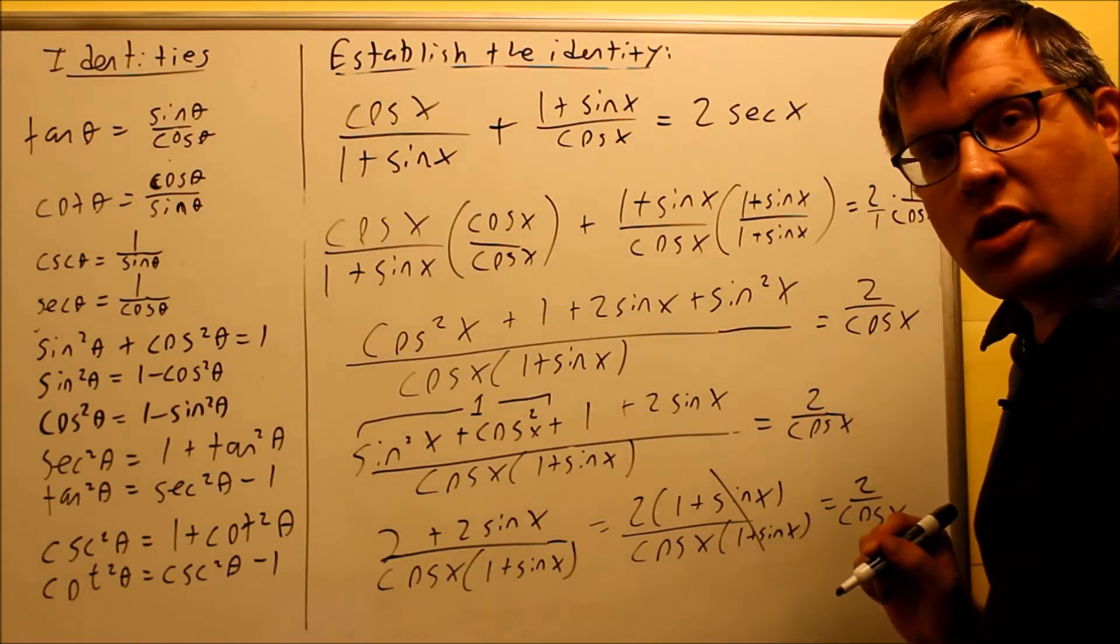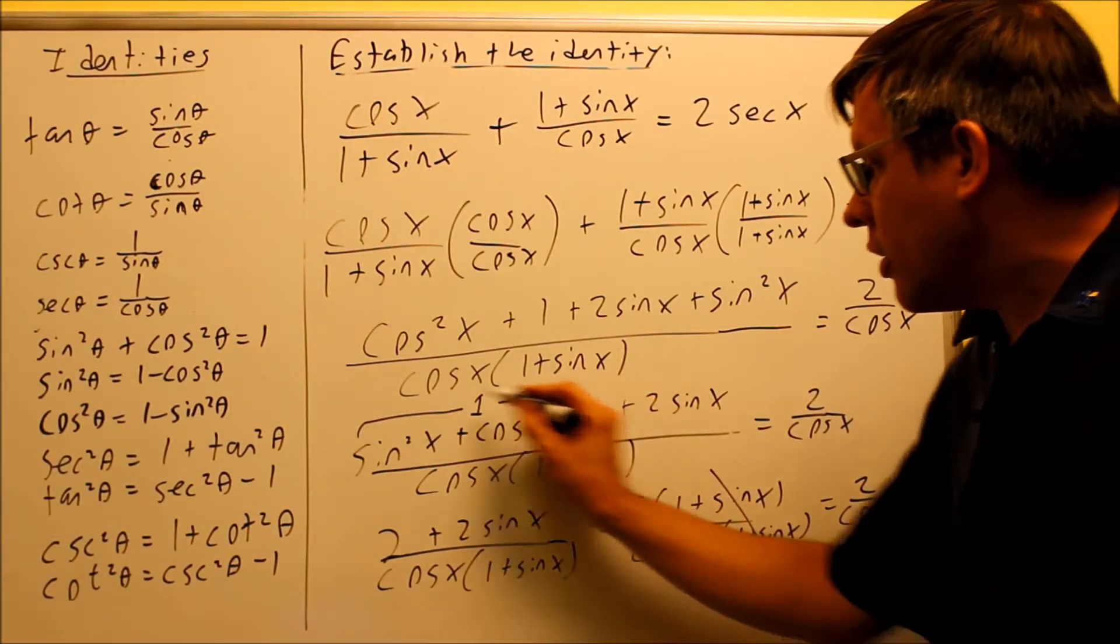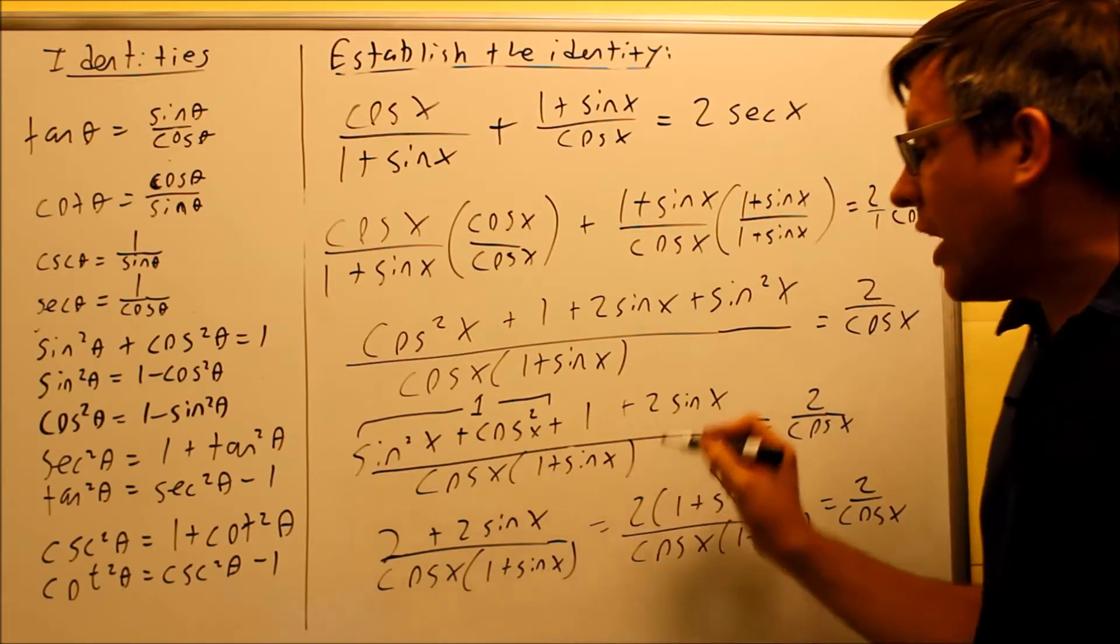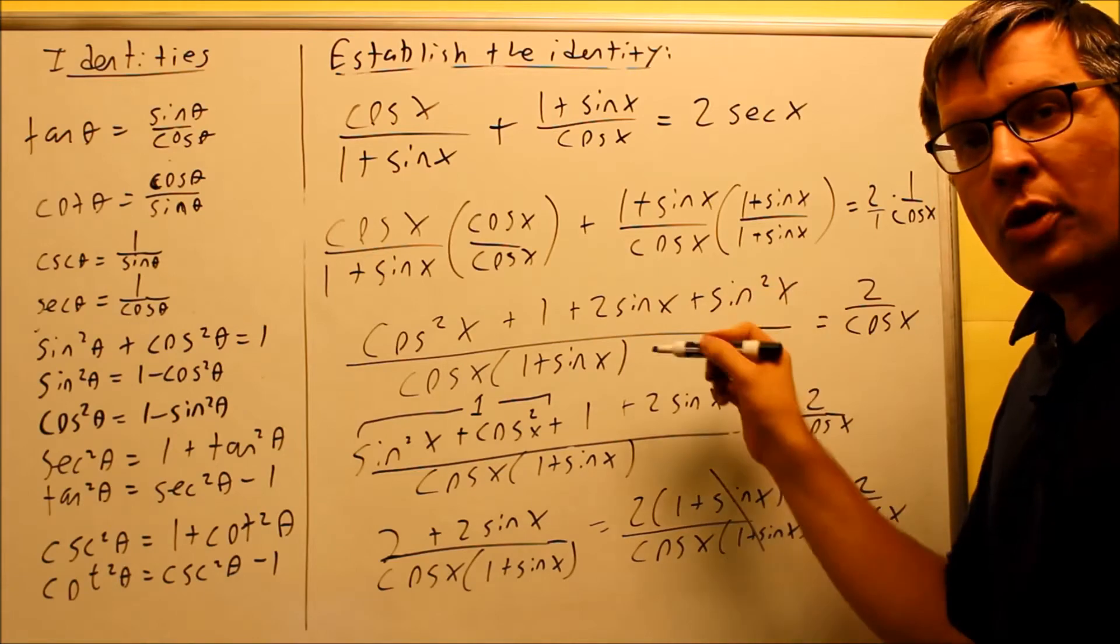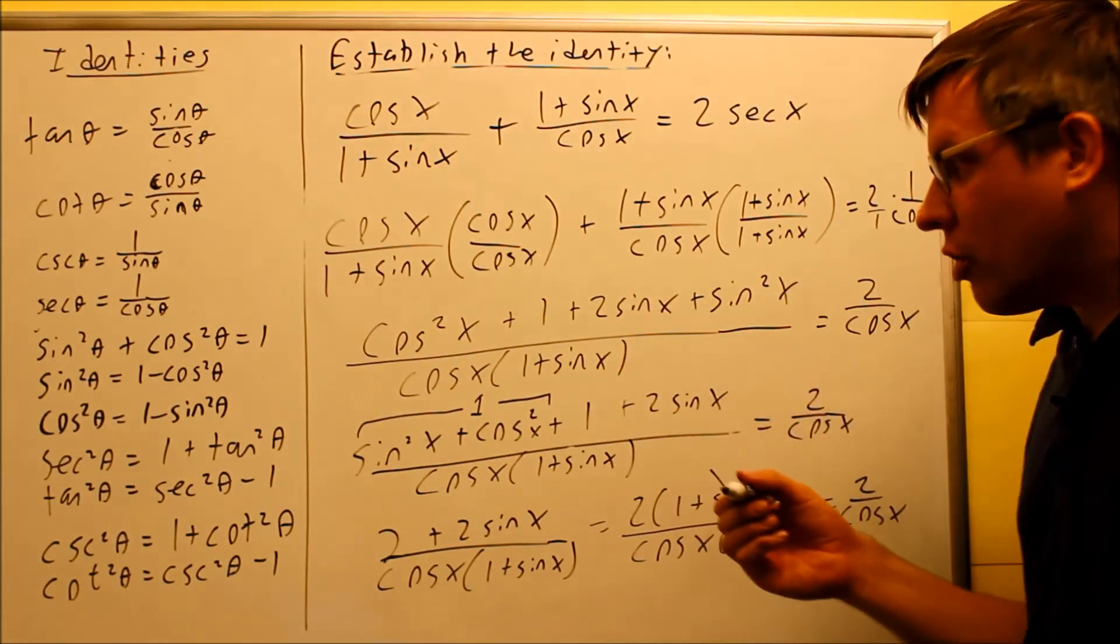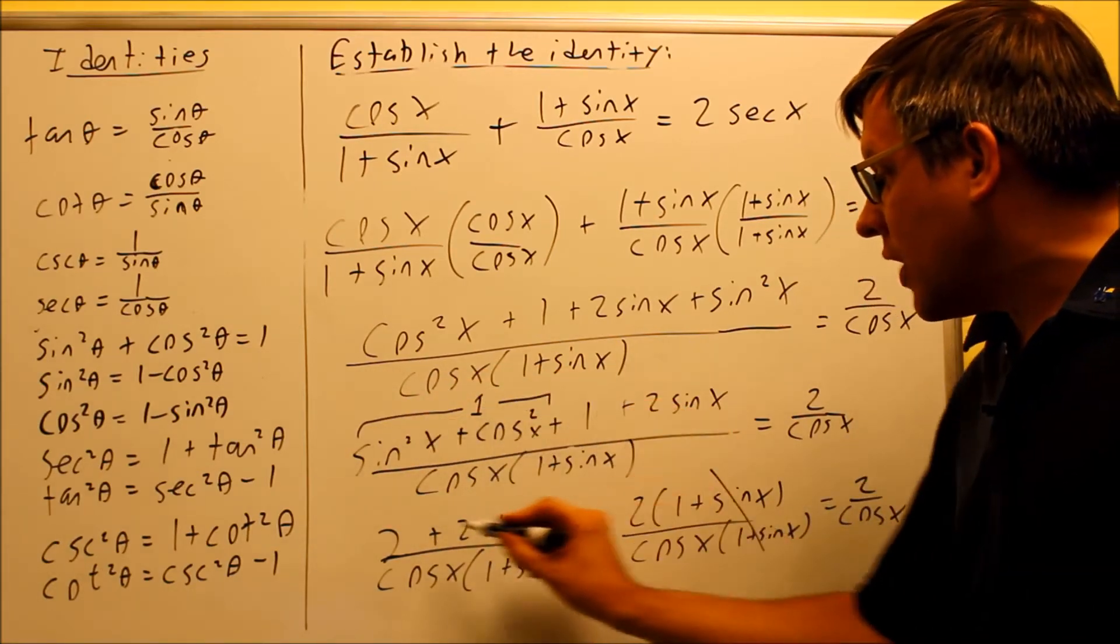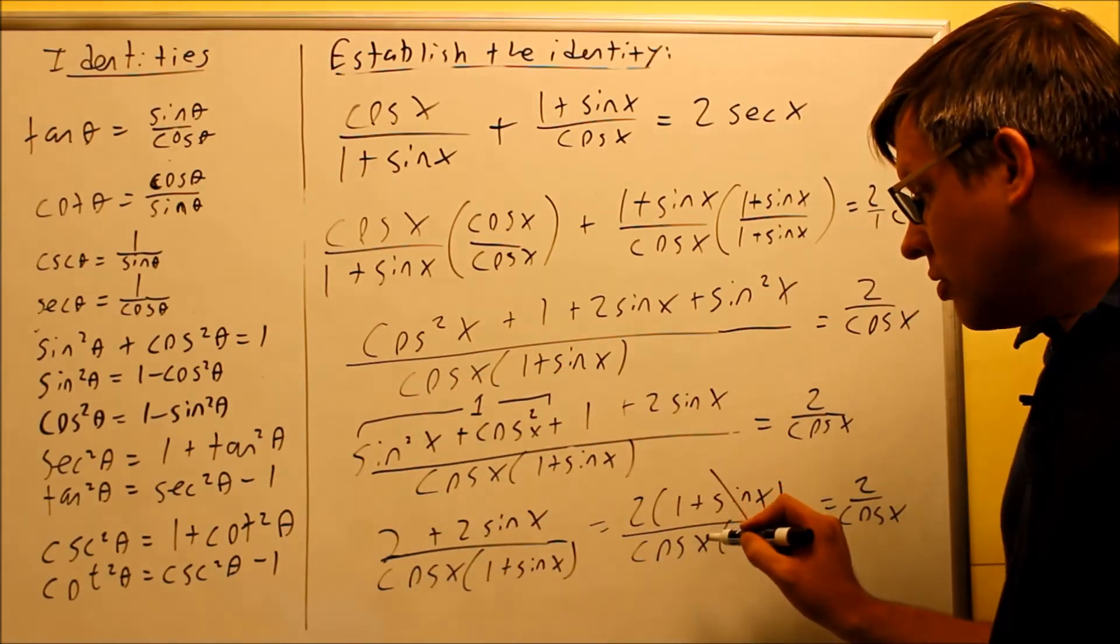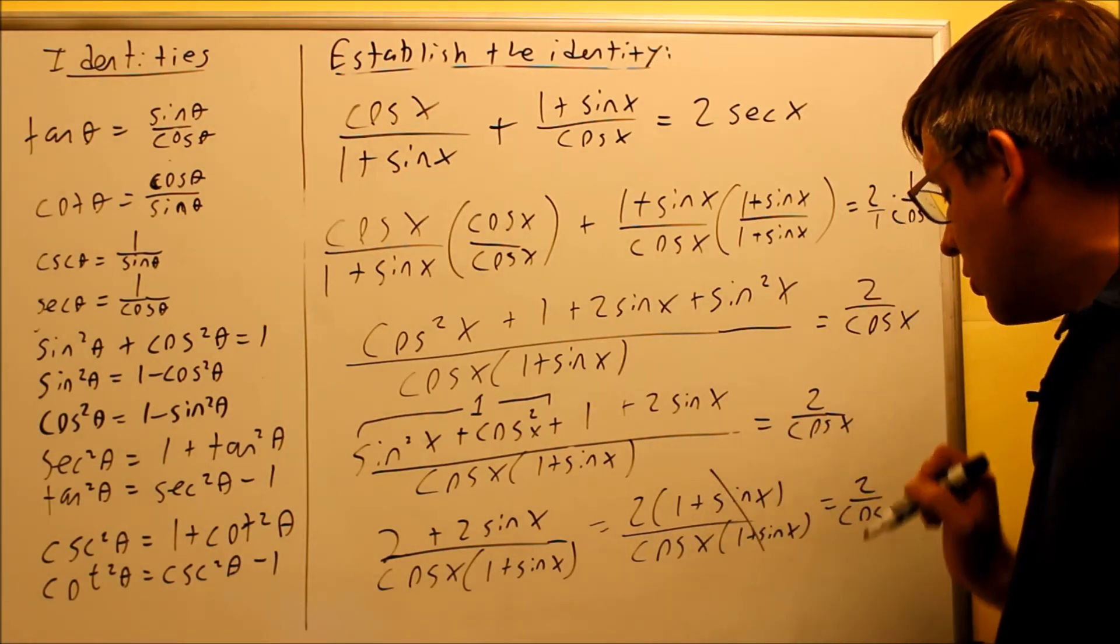Again, this right here, this is really important, that allowed us to actually finish the problem by understanding there's an identity in there. At this stage, there was nothing more we could have done, so that's why you want to start looking at your identities to see what you can actually put in. So that whole thing was a 1. This 1 plus that 1 gives you the 2. Factor out the 2, and since it's factored, we are allowed to cancel those to get 2 over cosine x.